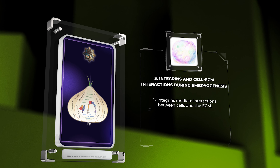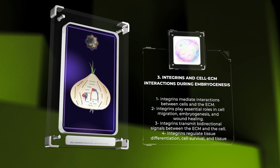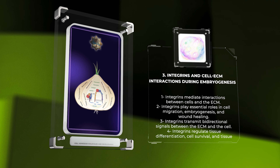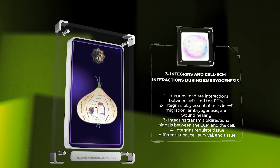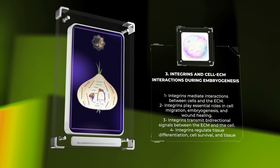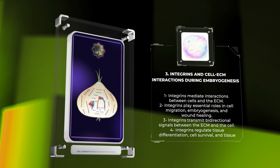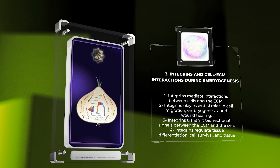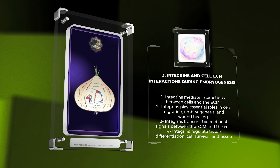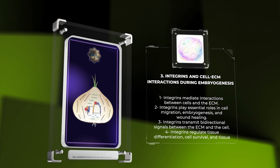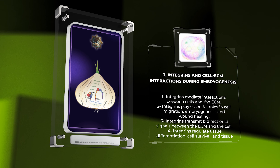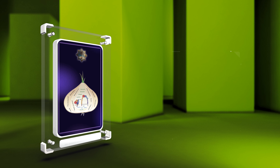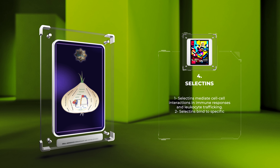Integrins are a family of CAMs that mediate interactions between cells and the ECM. These adhesion molecules play essential roles in cell migration, embryogenesis, and wound healing. Integrins function through bidirectional signaling, transmitting signals from the ECM into the cell and vice versa. They regulate processes such as tissue differentiation, cell survival, and tissue homeostasis.